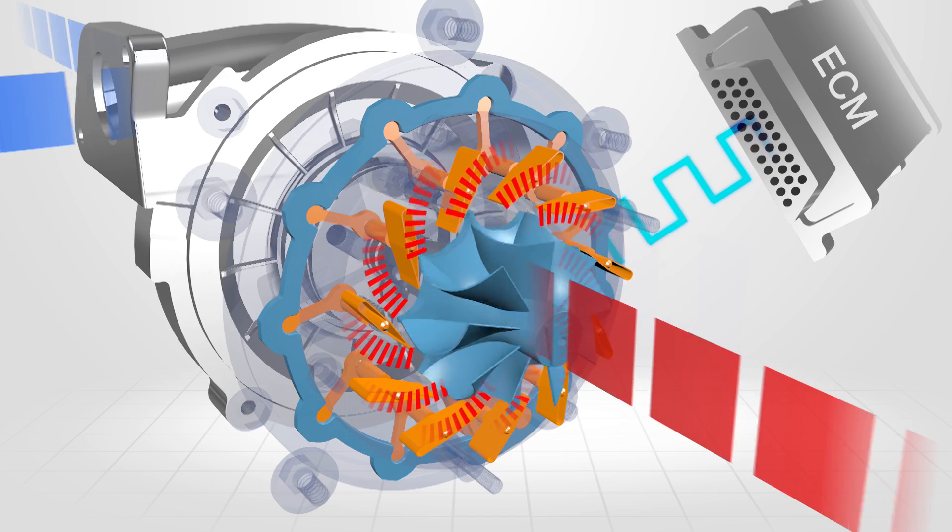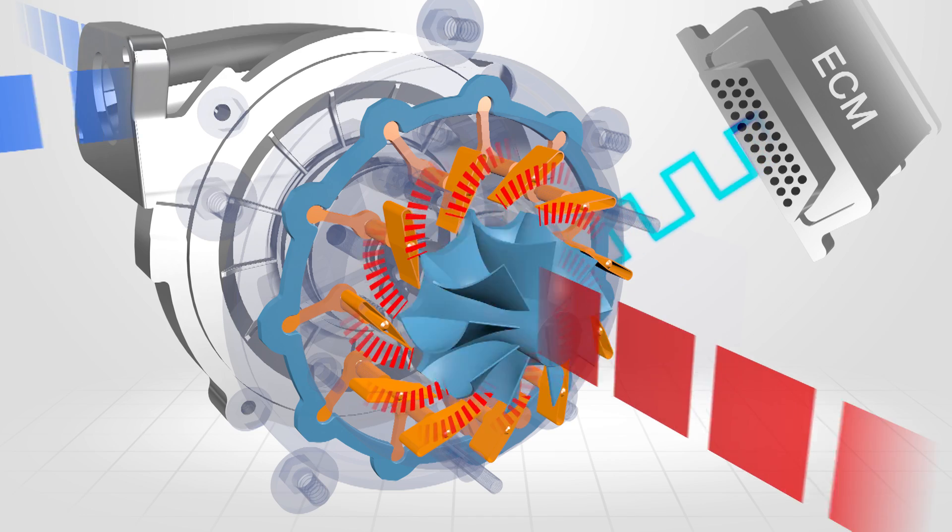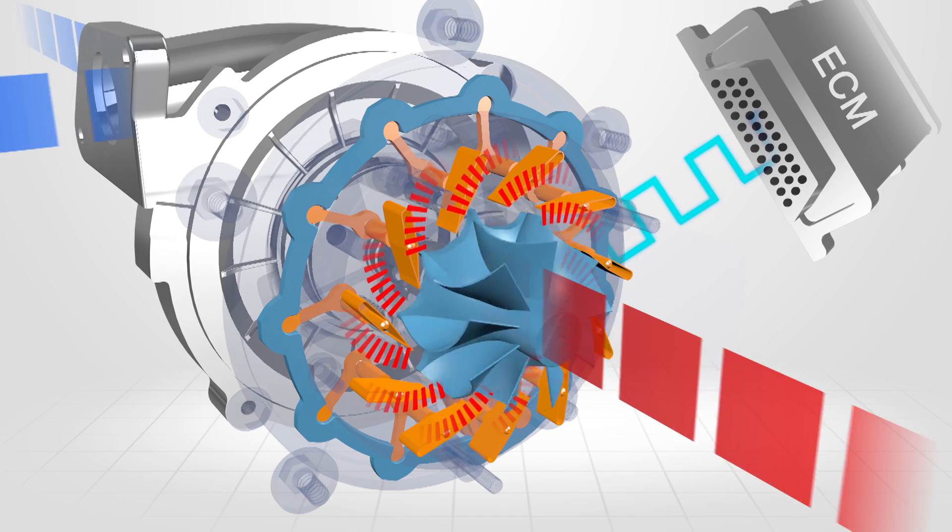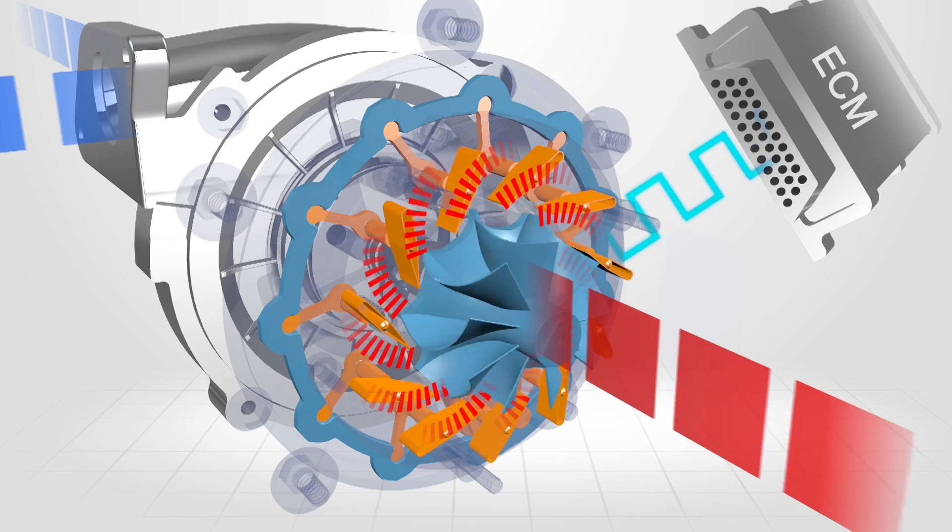The ECM may control the vanes position via a pulse width modulated output to a vanes position actuator. The driver ring rotates in response to these commands.